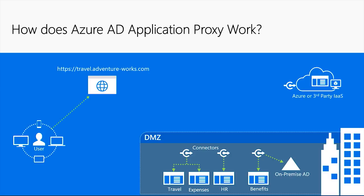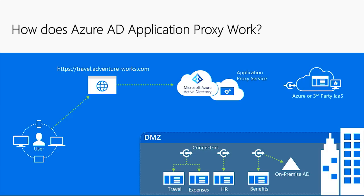When you publish an application, you will provide an external URL such as the one shown here. Your users can then go directly to this external URL, from where they'll be redirected to our service. We ask them to authenticate against Azure Active Directory. This is where your multi-factor authentication, conditional access, and any of these other things will come into play. And only once the user is authenticated will we then finish the connection to the connectors and to the on-premises resources.